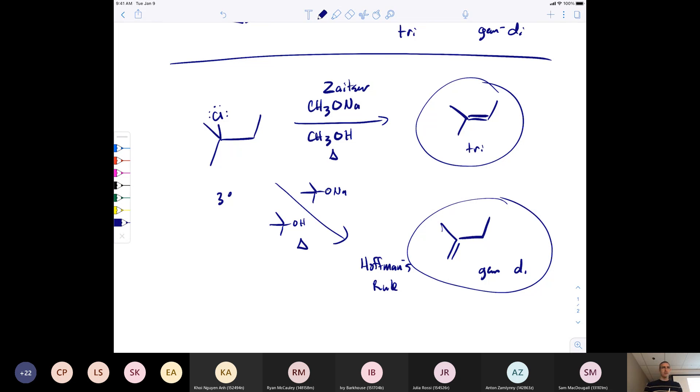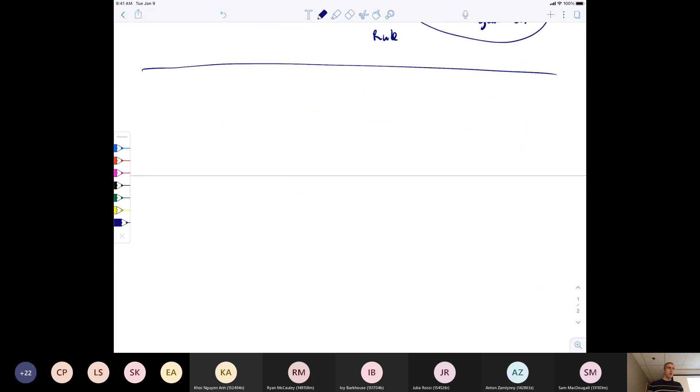I'm going to do Kimberly's question first. Can you explain polar protic and polar aprotic? Polar protic can hydrogen bond. They're things like water, alcohols, carboxylic acids like acetic acid or formic acid. These are all polar protic because they have an acidic or exchangeable proton. If they can hydrogen bond, they're polar protic.